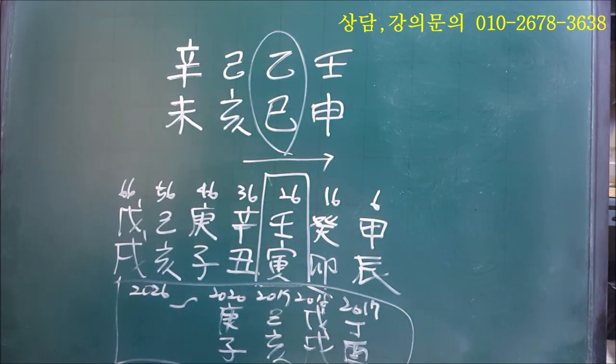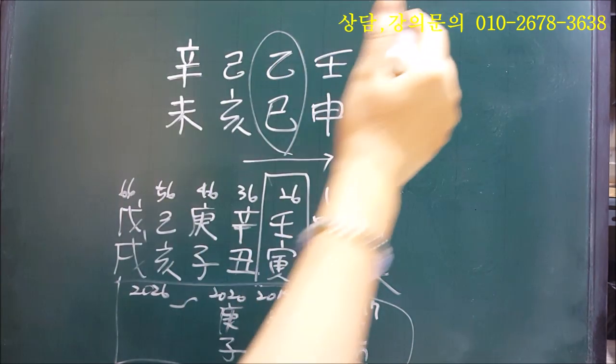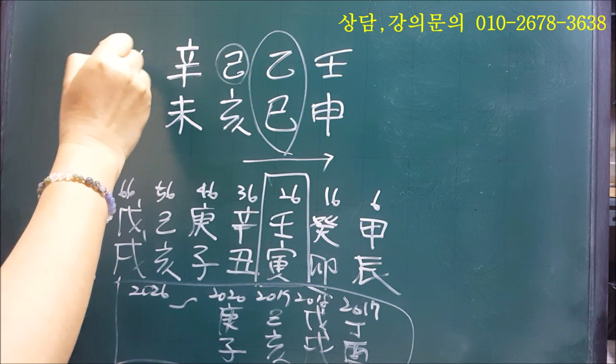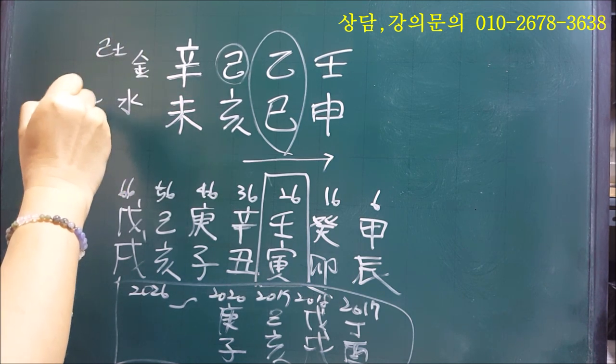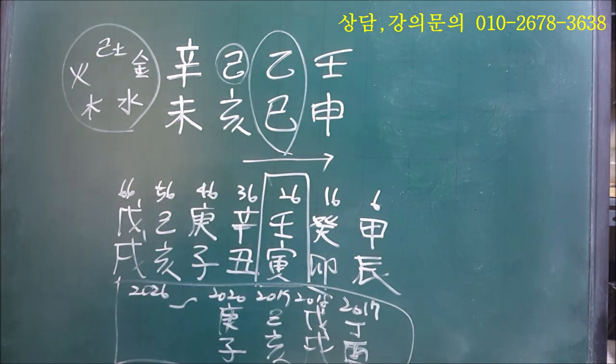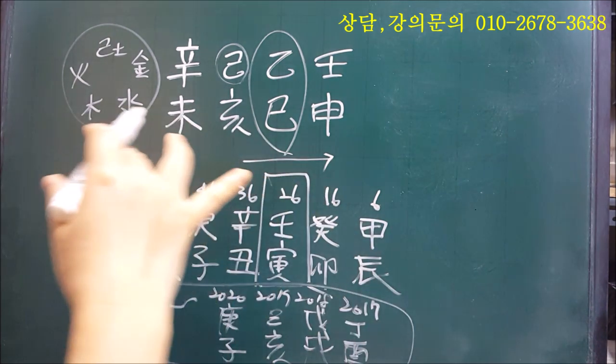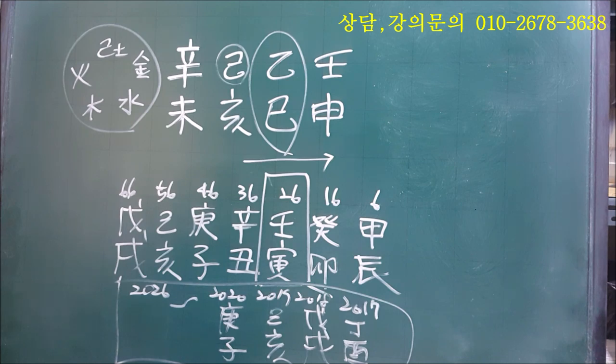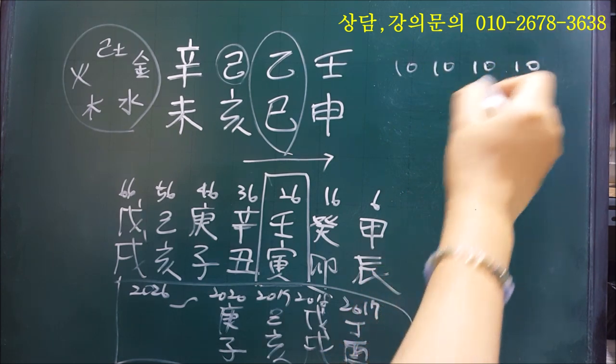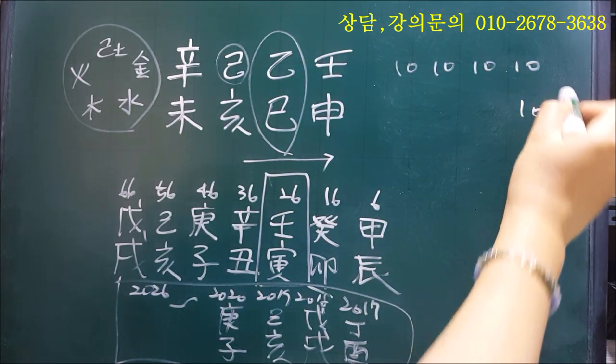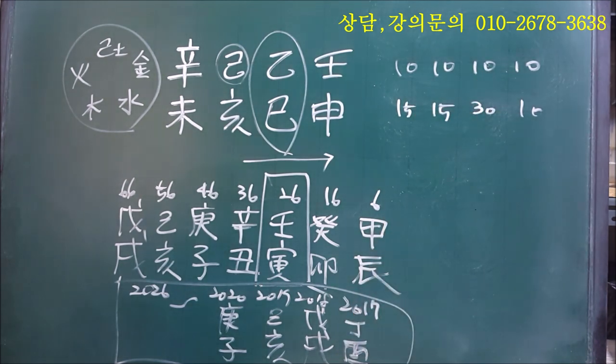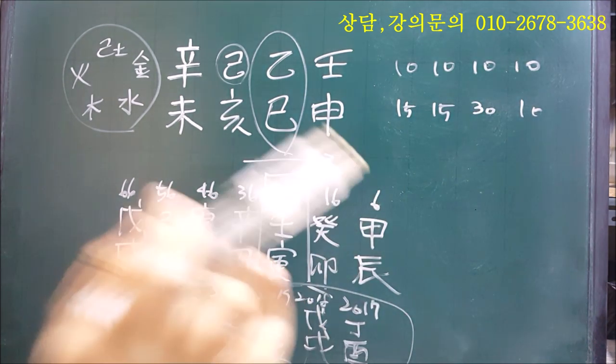사주를 풀 때 이분의 일간을 먼저 저는 항상 적어요. 여기다가 적거든요. 기토예요. 자, 이렇게 적고 점수표를 매길 수가 있는데 점수를 매길 때 예전에 가무당 책에서 배웠던 점수표를 제가 안내를 해드릴게요. 청간에는 전부 10점을 줘요. 여기까지도 10점이에요. 그런데 월지가 30점이고 여기는 15점씩 둡니다. 그래서 총합이 110점이 돼야 된다고 그 책에서 저는 배웠었어요.